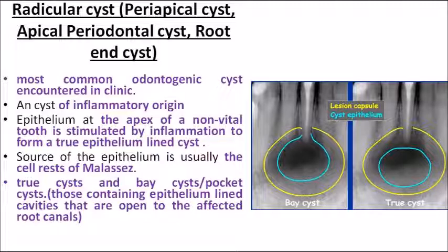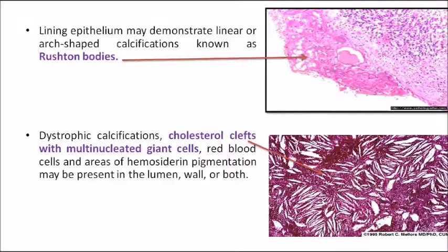The radicular cyst is mostly associated with the apex of a non-vital tooth, and the lesion is stimulated by inflammation. The epithelium originates mainly from the cell rests of Malassez, located next to the PDL. A bays cyst is otherwise called a pocket cyst because it has an opening toward the affected root canal. The radicular cyst is the most commonly seen odontogenic cyst encountered in clinics.